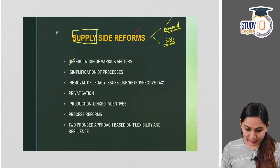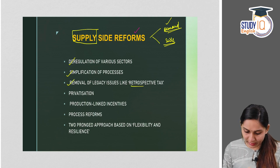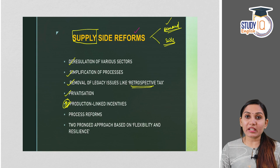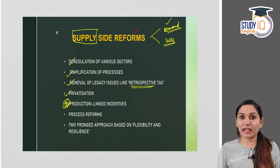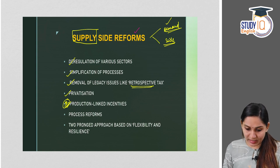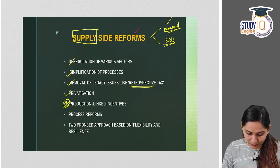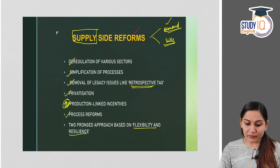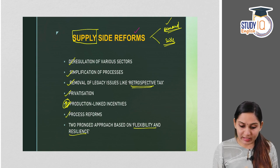The various supply side reforms undertaken by the government include: deregulation of various sectors, simplification of processes, removal of legacy issues like retrospective taxation, then privatization, production linked incentives — PLI schemes — which is a very important topic mentioned even in the budget, with expansion of PLI schemes to many other major sectors. Also process reforms and the two-pronged approach based on flexibility and resilience.